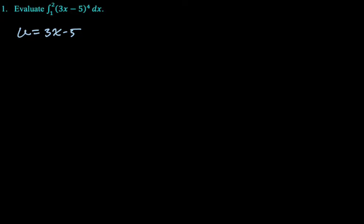So I'm going to choose the thing in parentheses. So I'm going to say that u is equal to 3x minus five. Now, if u is 3x minus five, then du is 3 dx, or one third du is equal to dx. Remember, you always have to replace dx. That's like the main thing that I see people forget.